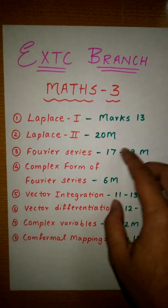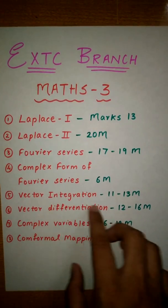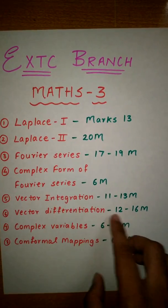Vector integration has 11 to 13 marks, and vector differentiation has 12 to 16 marks.